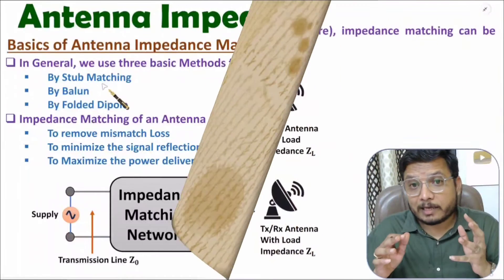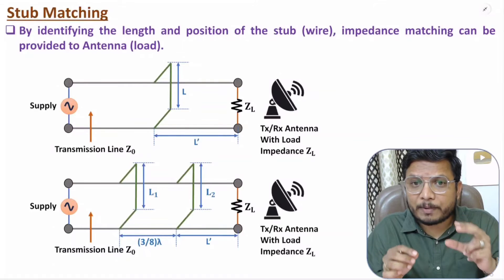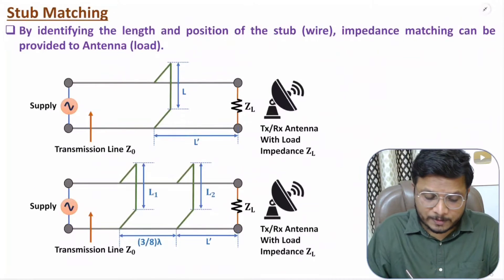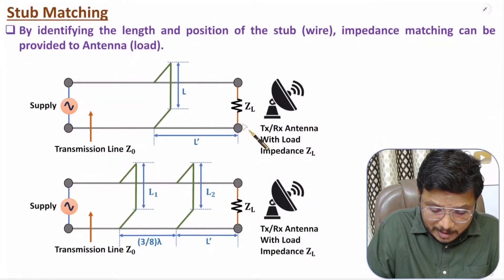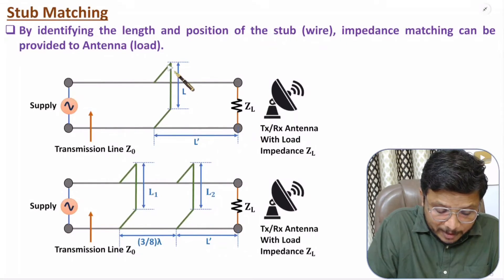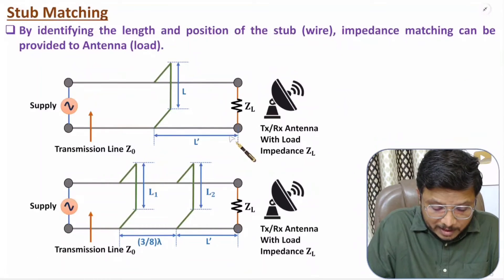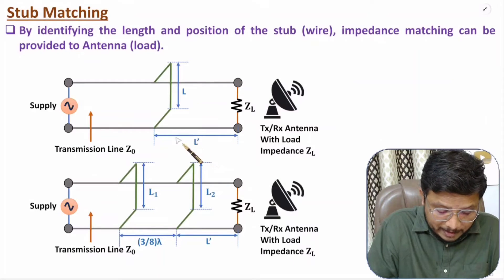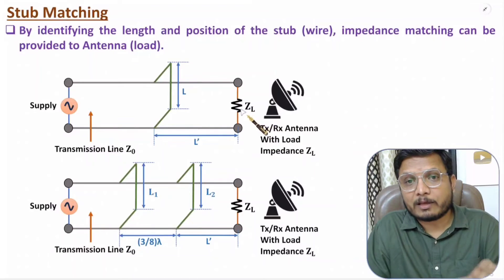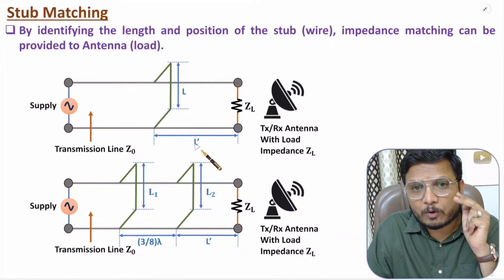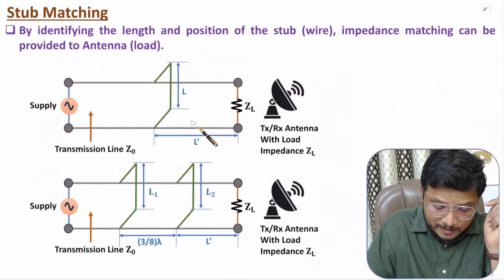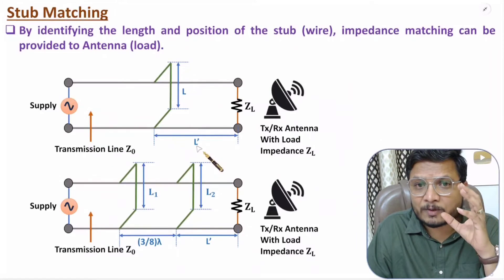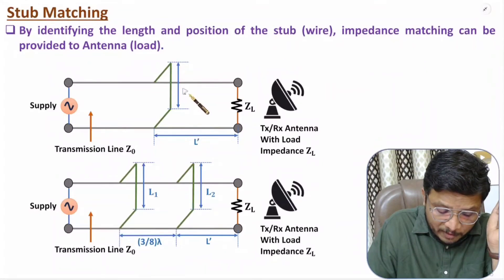The first impedance matching method is stub matching. In stub matching we simply use a wire to provide impedance matching of the transmission line with the antenna. We have transmission line with characteristic impedance Z0 and load impedance ZL. We need to identify the length L and position L-dash of the wire to achieve impedance matching. These equations are derived and solved in my microwave engineering video lecture series, including solutions using the Smith chart.